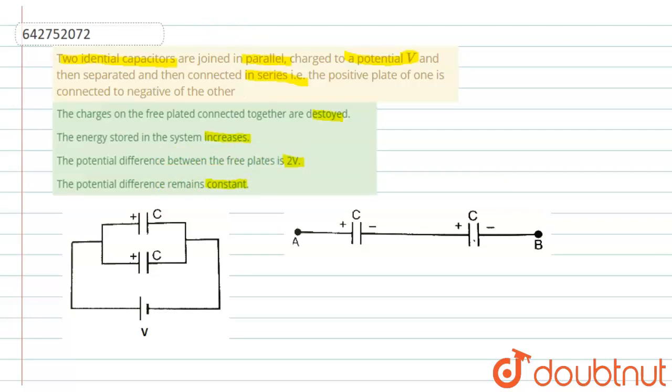We have two capacitors of capacitance C connected in parallel, so the potential difference across these two junctions is given by V. Since it is having potential V, now the charge flowing across this is given by Q.